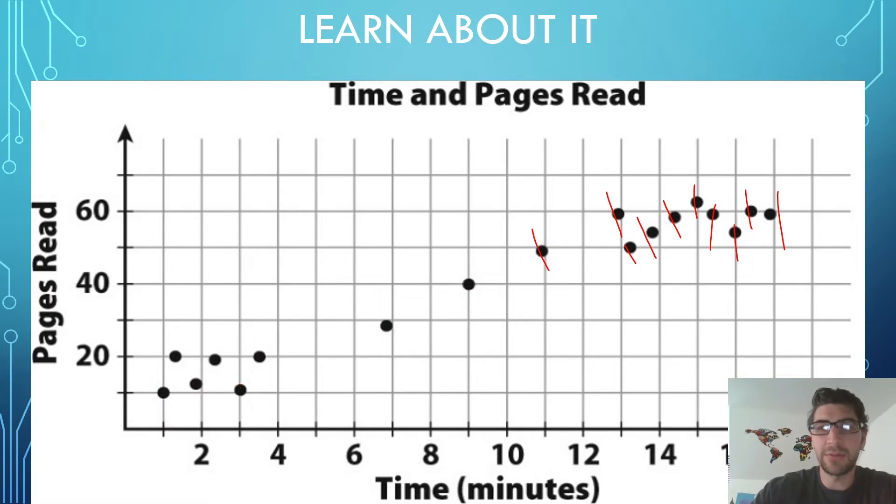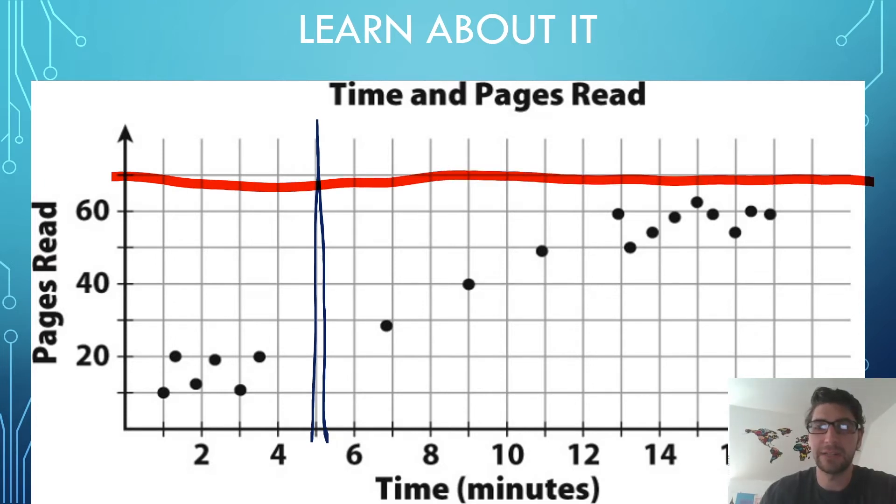We can also tell some other things about this data. For instance, I can tell you that no one read for 5 minutes. Here is 5 minutes and there are no points along that line. I can also tell you no one read 70 pages because there are no points at 70. I can tell you as well that the person that read the most number of pages was that student right there because their point is the highest along the pages read axis. And the student that read for the fewest minutes, that would be represented by this point right here because on the time axis, they are the one that showed that read for the fewest number of minutes.